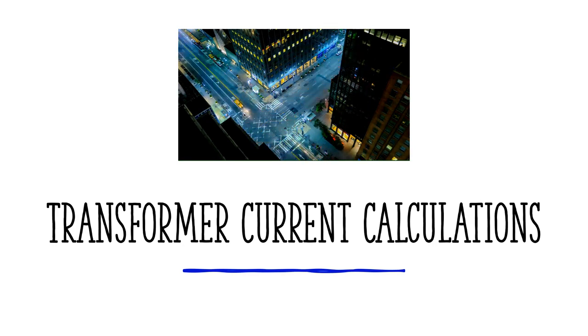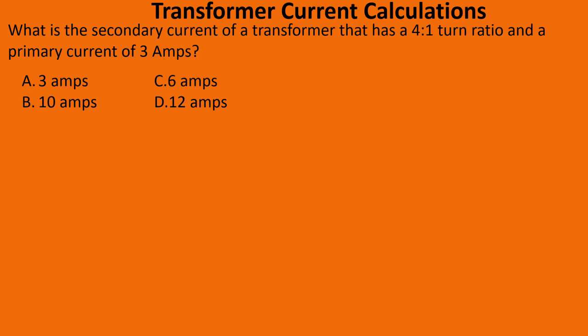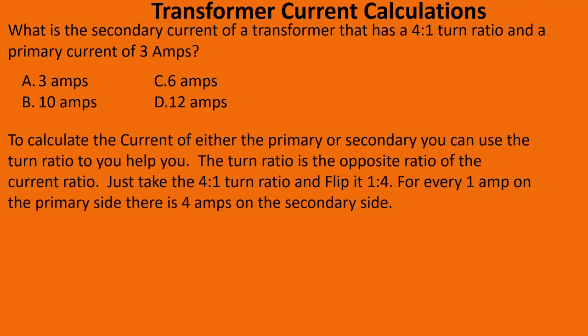Let's go ahead and do a practice question: what is the secondary current of a transformer that has a four-to-one turn ratio and a primary current of three amps? To calculate the current of either the primary or secondary, you can use the turn ratio to help you. The turn ratio is the opposite ratio of the current ratio.